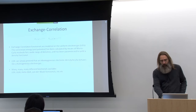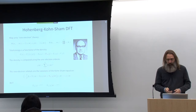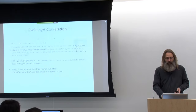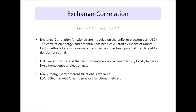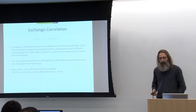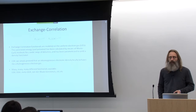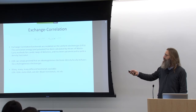Approximations start at this point, because for these exchange-correlation functionals we have to assume something. One of the first assumptions made was to model these quantities on the uniform electron gas — physicists really like this uniform electron gas. For this uniform electron gas, the correlation energy and potential have been calculated by Monte Carlo methods for a wide range of densities, then parameterized to yield functionals for both quantities.